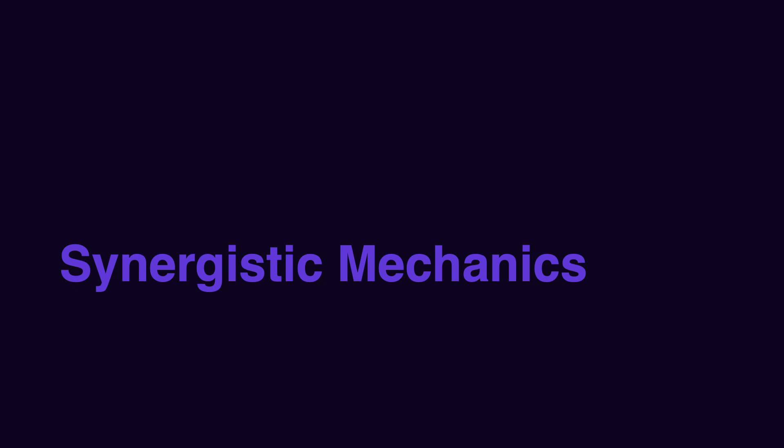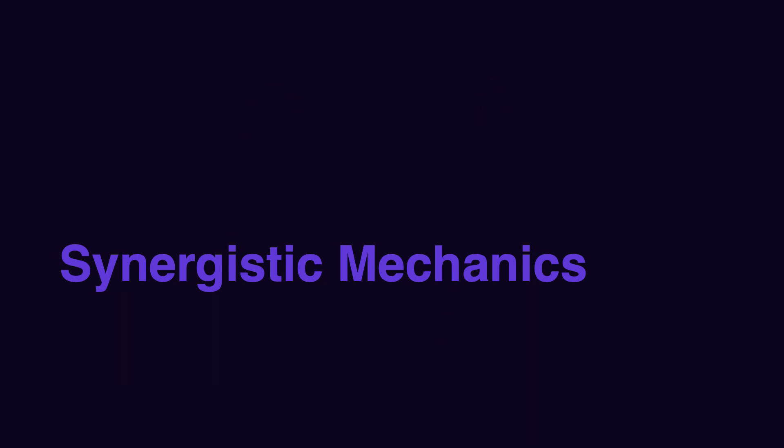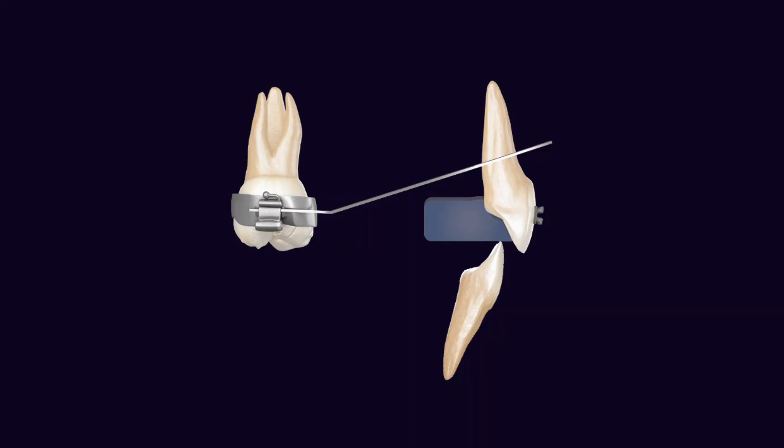What if you can use two or three mechanics at the same time and produce a synergistic effect? Let's look at an example. Assume you are planning to intrude the anterior teeth and extrude the posterior teeth to address a deep bite. In the upper arch, you place a posterior V-bend. As you remember from previous sessions, the posterior V-bend produces an intrusion force on the anterior segment and an extrusion force on the posterior segment. To increase the flexibility of the wire, you don't engage the premolars. You have a good force and moment pushing the molar toward Class I — everything is in your favor.